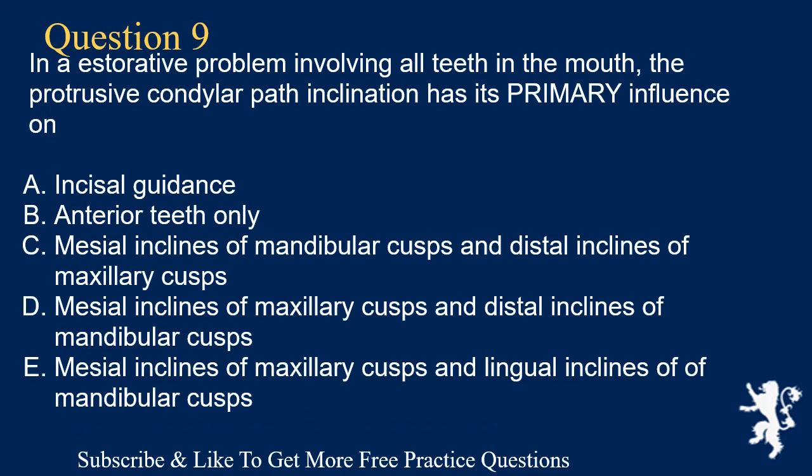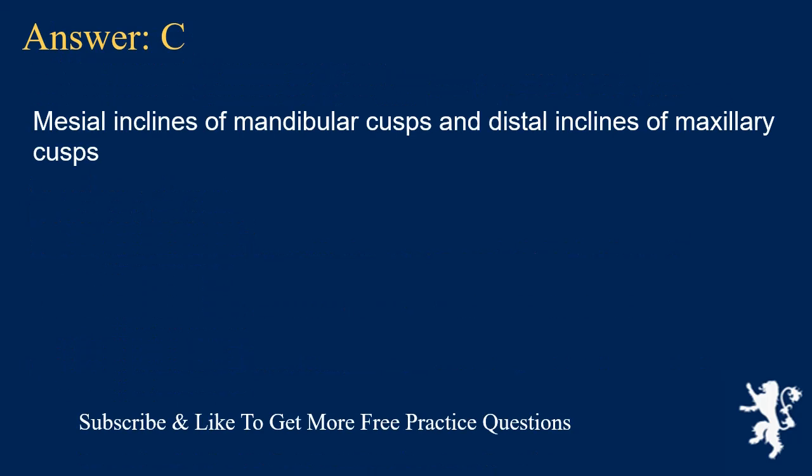Question 9. In a restorative problem involving all teeth in the mouth, the protrusive condylar path inclination has its primary influence on: A. Incisal guidance, B. Anterior teeth only, C. Mesial inclines of mandibular cusps and distal inclines of maxillary cusps, D. Mesial inclines of maxillary cusps and distal inclines of mandibular cusps. Answer: C. Mesial inclines of mandibular cusps and distal inclines of maxillary cusps.